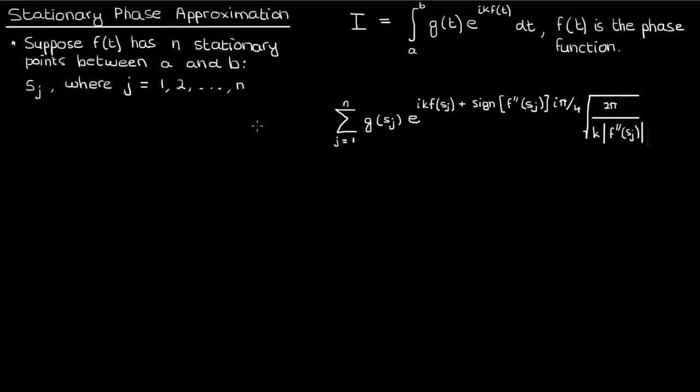Note that the sign function here just tells me the sign of the number inside: negative 1 for a negative number, 0 for 0, or 1 for a positive number. This approximation is better as k approaches infinity, so as the coefficient of the phase function f gets progressively large the approximation from this formula improves.